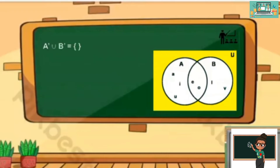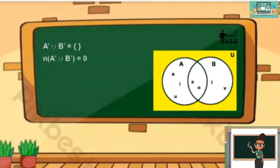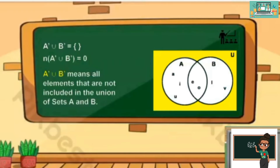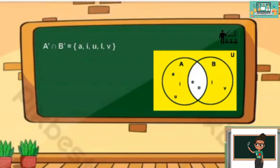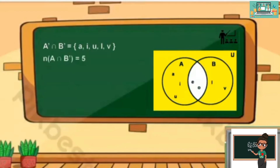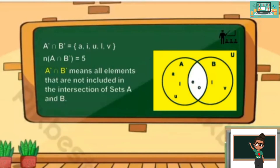How about this one? That is A prime union with B prime, which is equal to a null set. So the cardinality of this set is equal to 0. A prime union with B prime means all elements that are not included in the union of sets A and B. The cardinality of A prime intersect B prime equals {A, I, U, L, B}, so the cardinality is equal to 5. A prime intersect B prime means all elements that are not included in the intersection of set A and B.